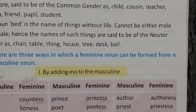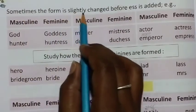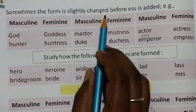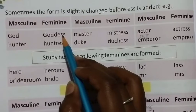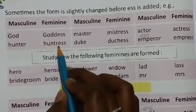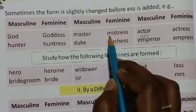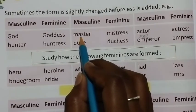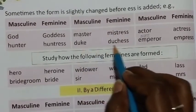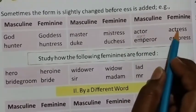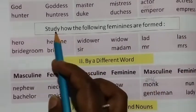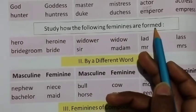Sometimes the form is slightly changed before '-ess' is added. For example: god becomes goddess, hunter becomes huntress, master becomes mistress. Also: actor becomes actress, emperor becomes empress.